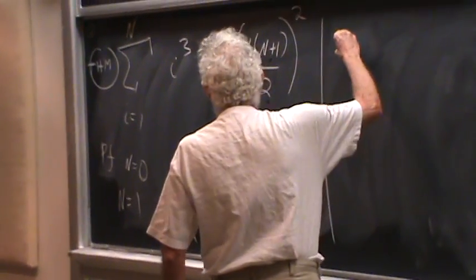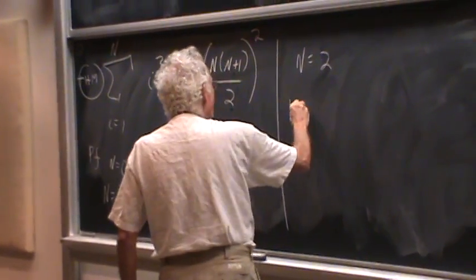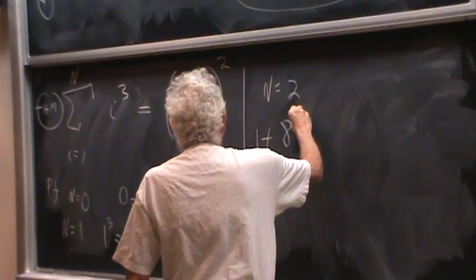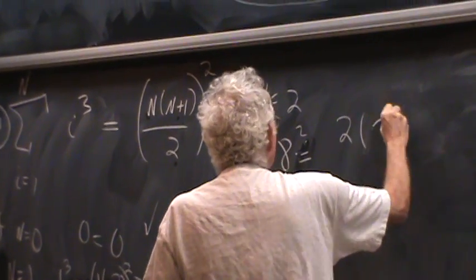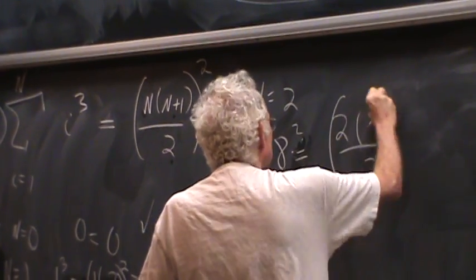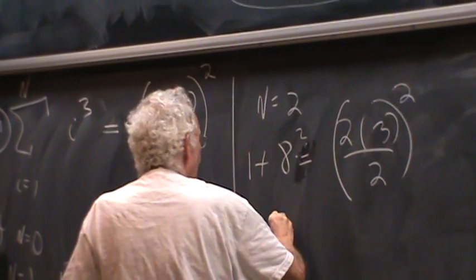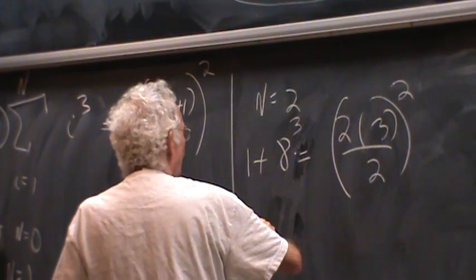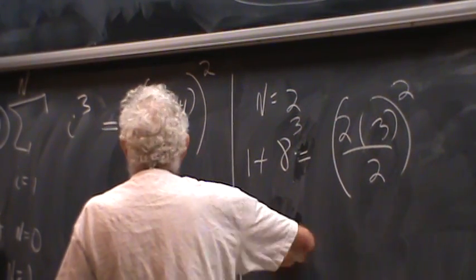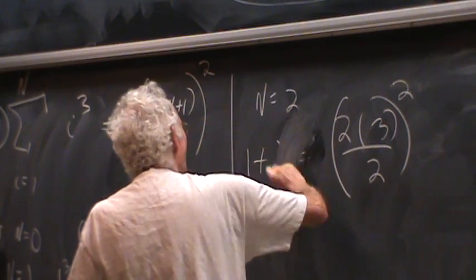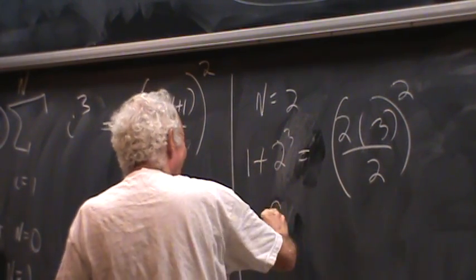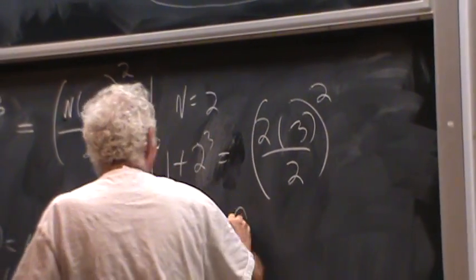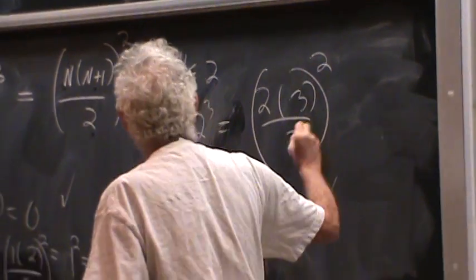For n equals 2, you get 1 plus 8. If you plug n equals 2, 2 times 3 over 2, squared. Sorry, you get 1 plus 2 cubed. 9. You see, my human is just stupid. Computer will not make this mistake. 9 equals 9, yeah.